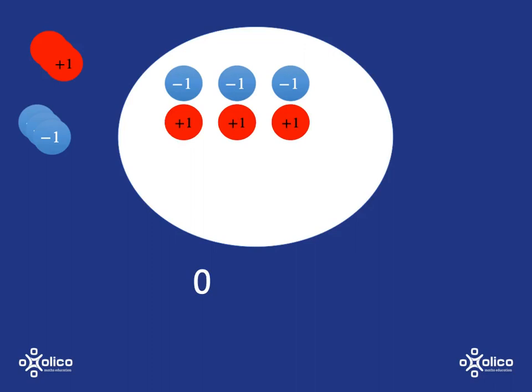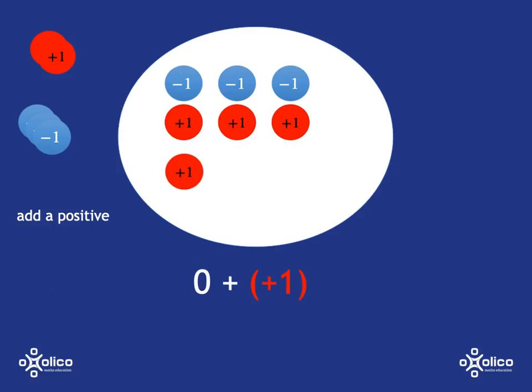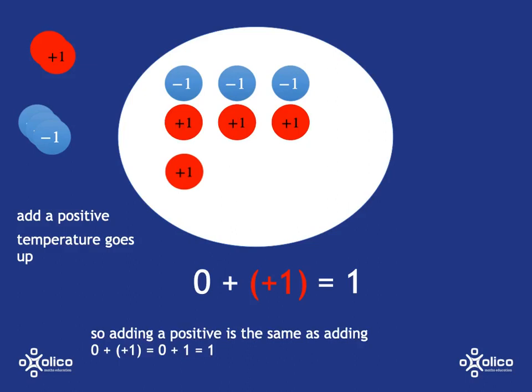If we add in one more hot disk, will our temperature go up or down? You can immediately see that adding in something hot is going to make the temperature go up. Our temperature goes from zero to one. So adding in a positive — adding in something hot — is just the same as adding, going up.